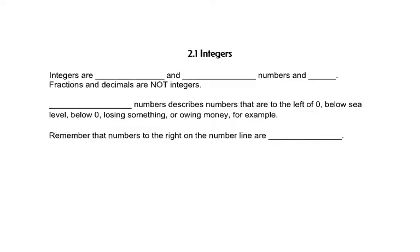Integers are positive and negative numbers and zero. That doesn't look like a zero. Zero. Fractions and decimals are not integers.